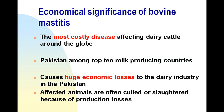Mastitis is the most costly disease affecting dairy cattle around the globe. Pakistan is among the top ten milk-producing countries, so mastitis causes huge economic losses to the dairy industry in Pakistan. Affected animals are often culled or slaughtered because of production losses. If mastitis occurs in an animal and is not properly treated and diagnosed on time, it results in culling — meaning you have to sell or remove that animal from your herd, which is of course a big loss.